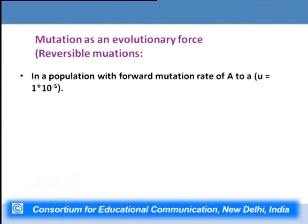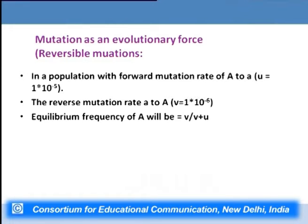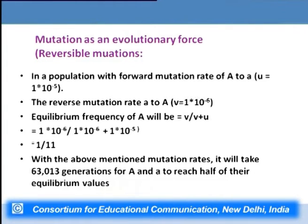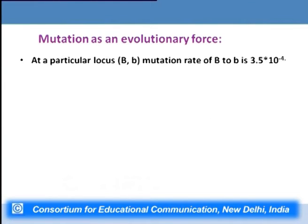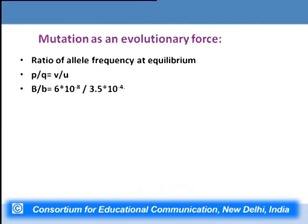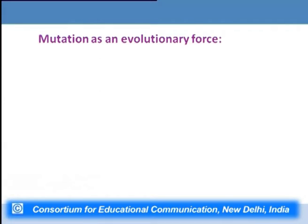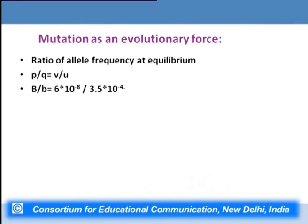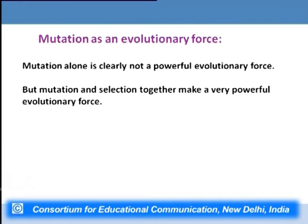In a population with forward mutation rate U = 1 × 10⁻⁵ (A to a) and reverse mutation rate V = 1 × 10⁻⁶ (a to A), the equilibrium frequency of capital A is V/(V + U) = 1/11. At the above mutation rates it will take about 63,013 generations for capital A and small a to reach half of their equilibrium value. This confirms that mutation alone is not a powerful evolutionary force, but mutation combined with selection is.